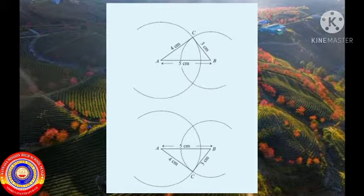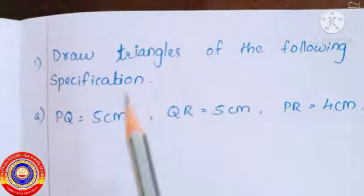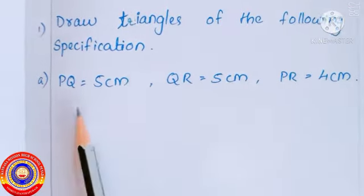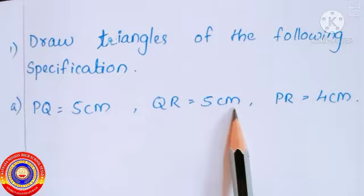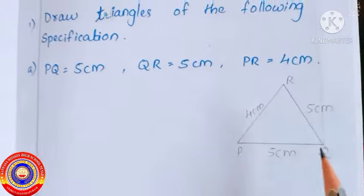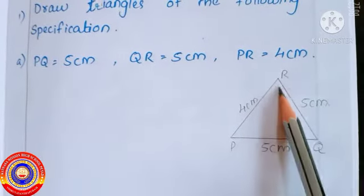Let's do a problem related to this in your textbook page number 111. Draw triangles of the following specification: PQ is 5 centimeters, QR 5 centimeters, and PR 4 centimeters. First draw a rough figure for reference.